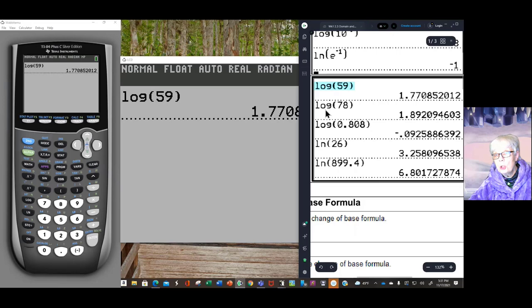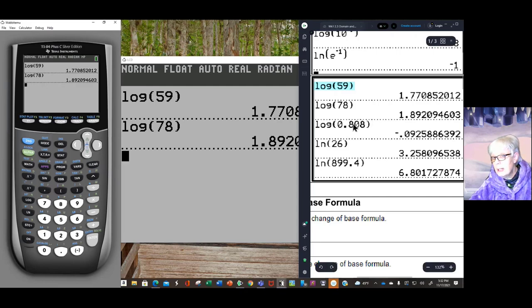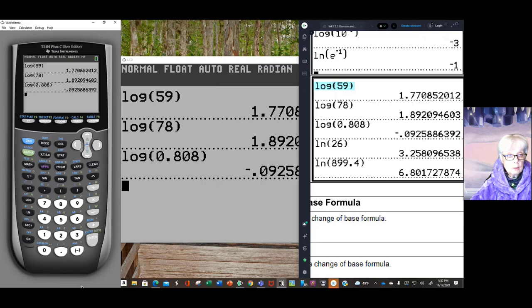Let's see what's next. The log of 78. 78. Close parenthesis. Enter. Here you go. Now the log of 0.808. Log. 0.808. Close paren. Enter. Negative 0.9258.